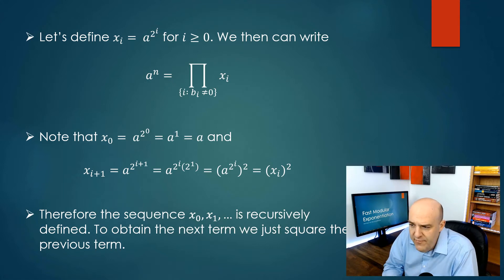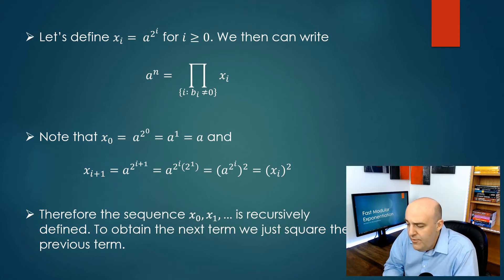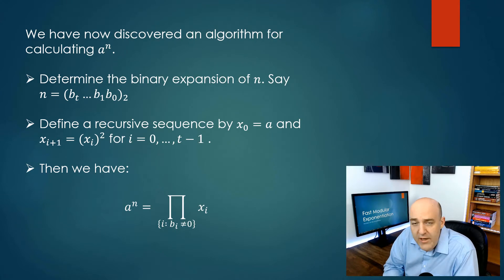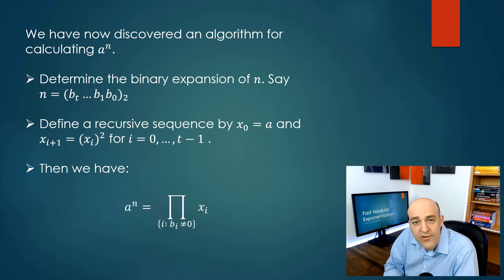Looking at this sequence: x0 is a to the power of 2 to the 0, which is just a. And there's a nice recursion — xi plus 1 is just the square of xi. So we have a recursive sequence starting at a, where each next term is the square of the previous one. This gives us an algorithm to calculate a to the n: look at the binary expansion of n, build the sequence xi starting at x0 equals a with xi+1 equals xi squared, and a to the n is the product of the xi's whose index i corresponds to a non-zero binary digit bi.